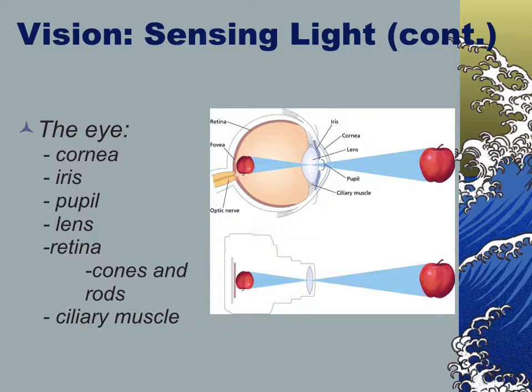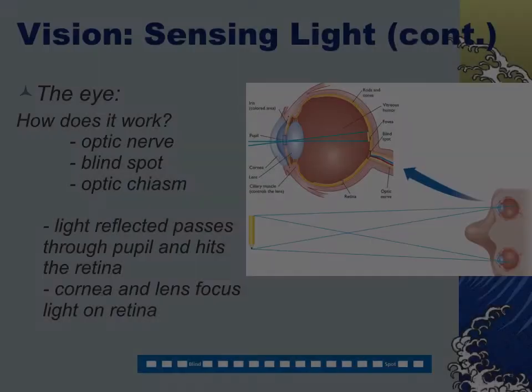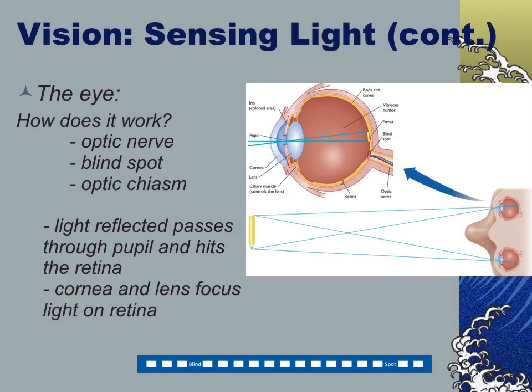The cones are basically the color receptors, and the rods are more black-and-white sort of receptors. People are always talking about how cats have more rods than cones, and that's where they can see in the dark better. There are various parts of the eye that communicate with each other.